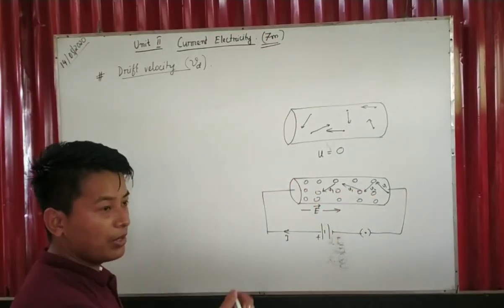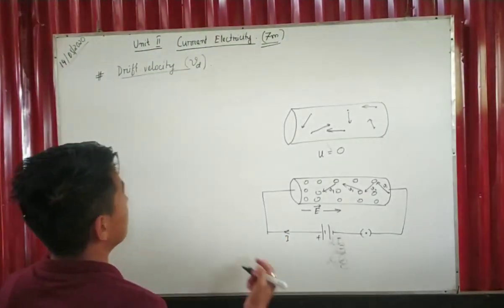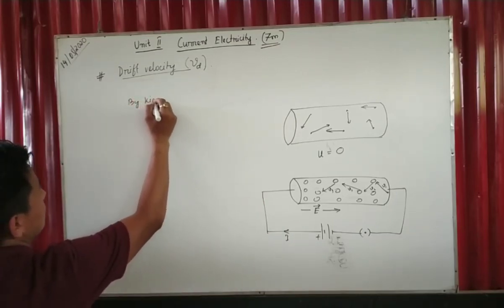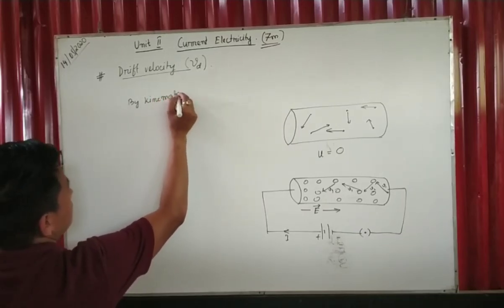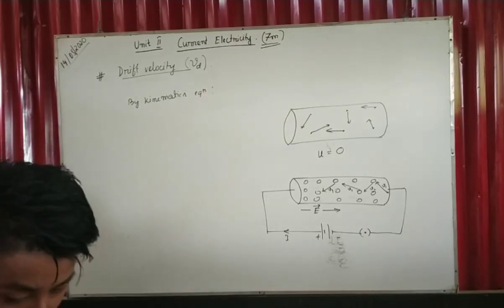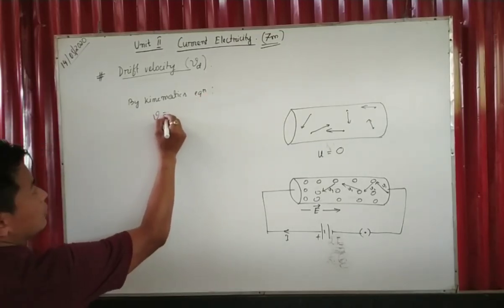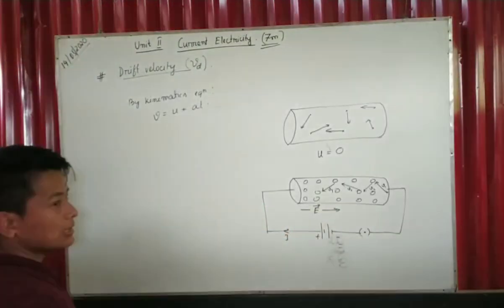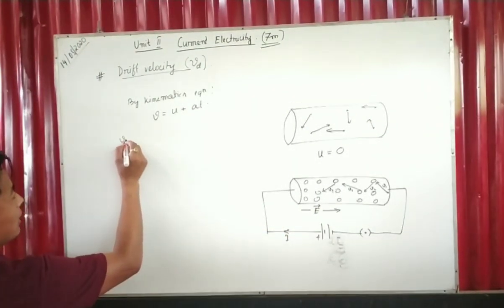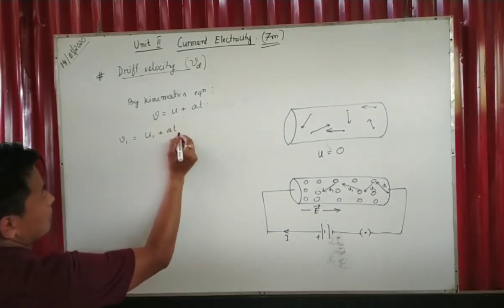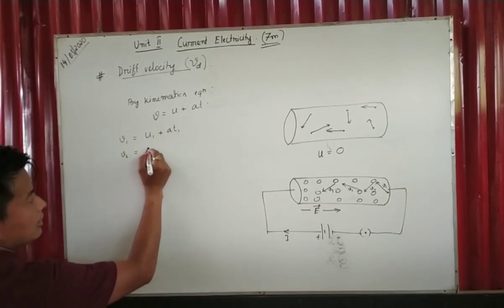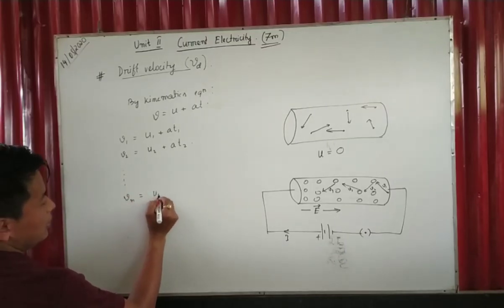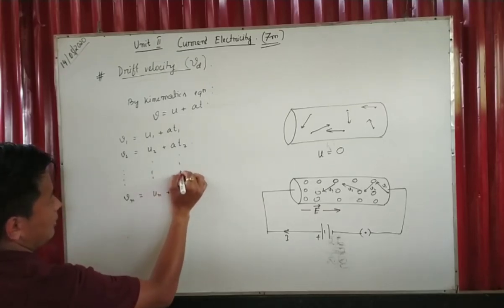We consider velocities v1, v2, v3, v4, up to vn — you can see the velocity of each particle. Now we can apply the kinematics equation. By the kinematics equation, v equals u plus at for uniformly accelerated motion. So: v1 = u1 + at1, v2 = u2 + at2, and so on up to vn = un + atn.